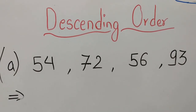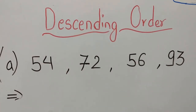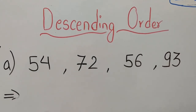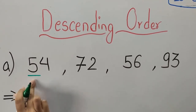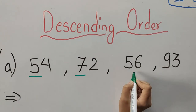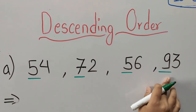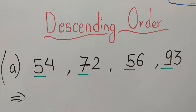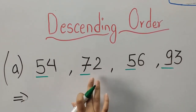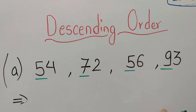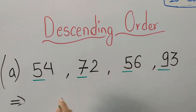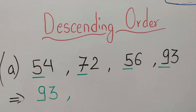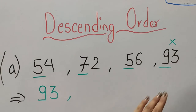While arranging numbers in descending order, we have to remember the backward counting. Let's focus on the first numbers first. Over here, 5 is the first number; 7 is the first number in 72; 5 is the first number in 56; and 9 is the first number in 93. Which number is the biggest? 9 is the biggest number, so we will write 93 first. Then 7 is the next biggest, so we write 72 second.